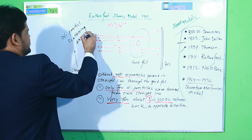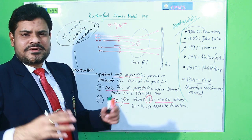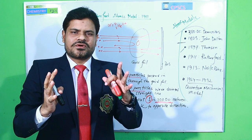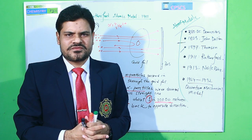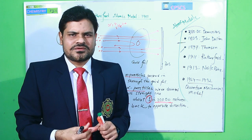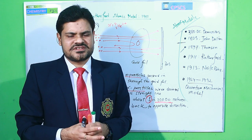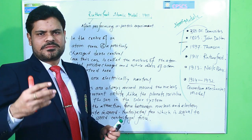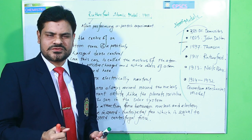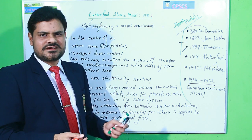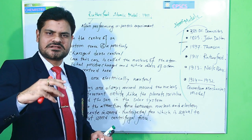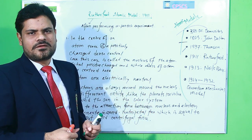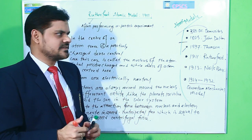By this alpha particle scattering experiment, Mr. Rutherford submitted some information regarding the structure of the atom, known as Rutherford's atomic model. In 1911, Mr. Rutherford performed this experiment and proposed some information. What are the postulates of the Rutherford atomic model?